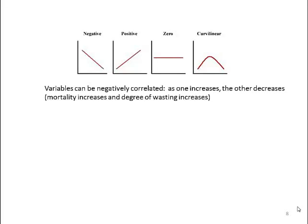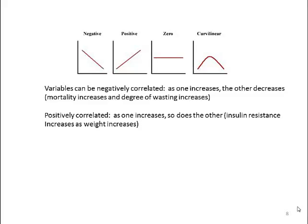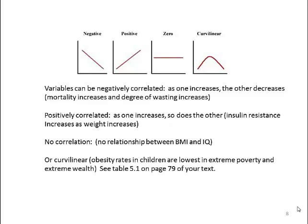Here are some examples. In a negative correlation, mortality increases as the degree of wasting in a patient increases. An example of a positive correlation is that insulin resistance goes up as weight increases. There's no correlation between BMI and IQ. Here's an example of a curvilinear relationship: obesity rates in children are lowest in extreme poverty and extreme wealth. There's further explanation on this on page 79 of your book.